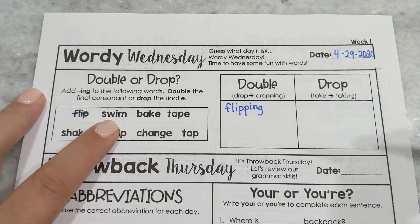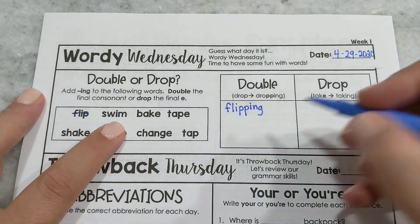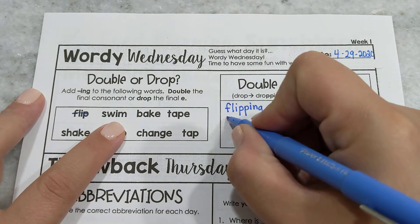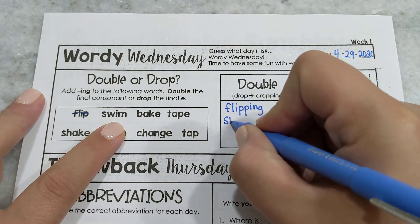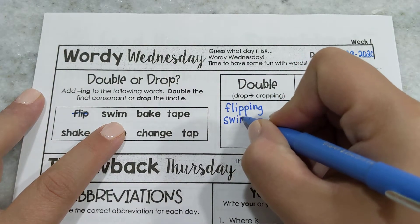Here I have the word swim. It ends in a consonant, so what am I going to have to do? I'm going to have to double it. Otherwise it would be 'swiming.'